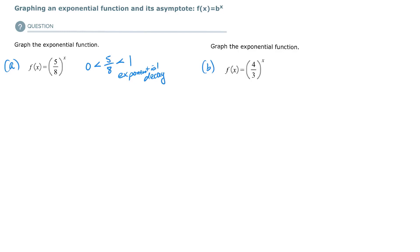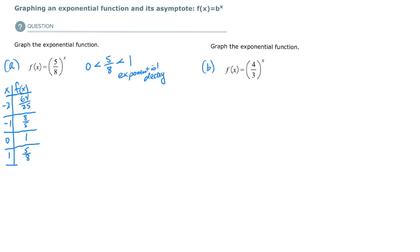Let's get some ordered pairs going. So x, f of x. If x is negative 2, then we have 64 over 25. If x is negative 1, then we have 8/5ths. If x is 0, then we have 1. The first power, we get 5/8ths. And then the second power, we get 25/64ths.